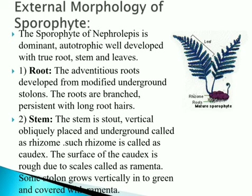The sporophyte is autotrophic — it produces its own food. The root: adventitious roots develop from the modified underground stolon, and the roots are branched and persistent with a long root hair. This is about the root structure externally.